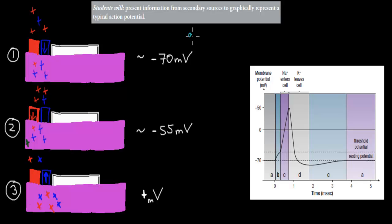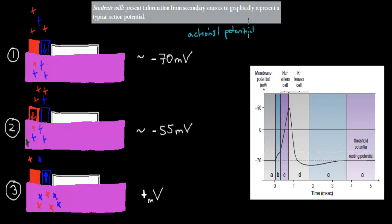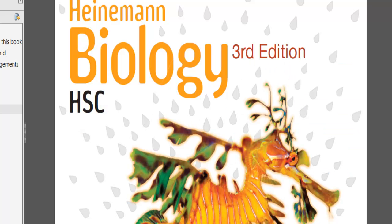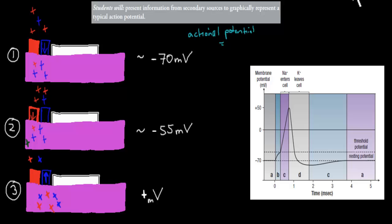In the last video we talked about the action potential, and there is a bit more to it than what I showed before. I mentioned the sodium-potassium pumps and the potassium and sodium channels. So what we're going to do in this video is cover those in more detail, and also show a graphical representation of what the actual action potential looks like. I got this graph from the Heinemann Biology book, so I'm giving my source for copyright purposes.